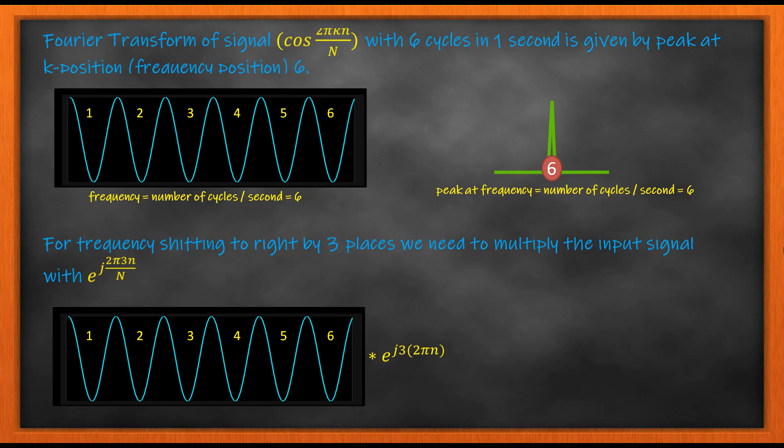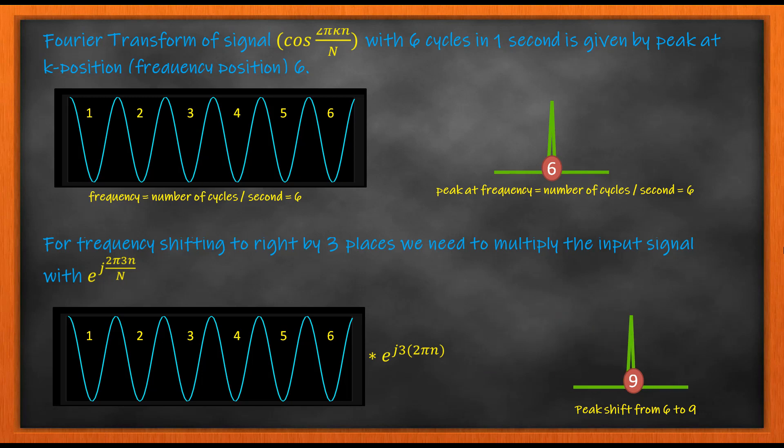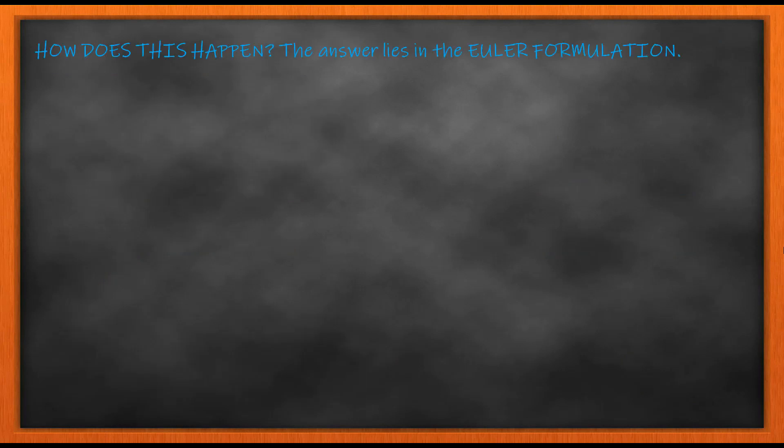For the frequency shifting property I am going to use a three-unit shift signal. That is, I am going to multiply it with e to the power of j 3 times 2 pi n. The 2 pi n is important because we need it for periodicity. So my shift, or k0, is only 3. Multiplying with e to the power of j 3 times 2 pi n will shift the Fourier transform from position six by three places to position nine. This is frequency shifting.